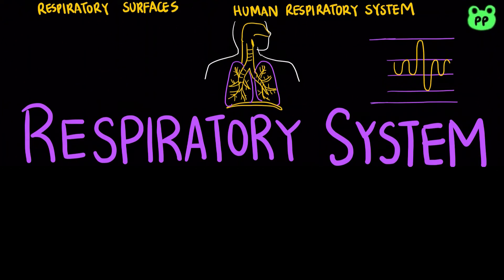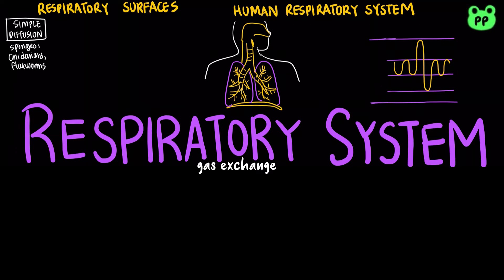The respiratory system is an organ system that functions in gas exchange, bringing in oxygen and disposing of carbon dioxide for cellular respiration. Some primitive animals, such as sponges, cnidarians, and flatworms, don't have a respiratory surface. They exchange gas through simple diffusion since every cell is close to the external environment.